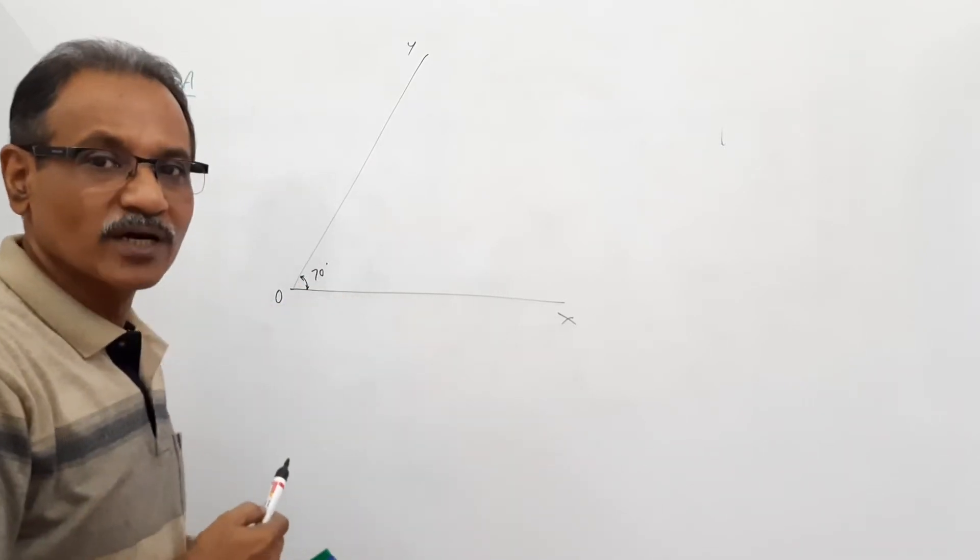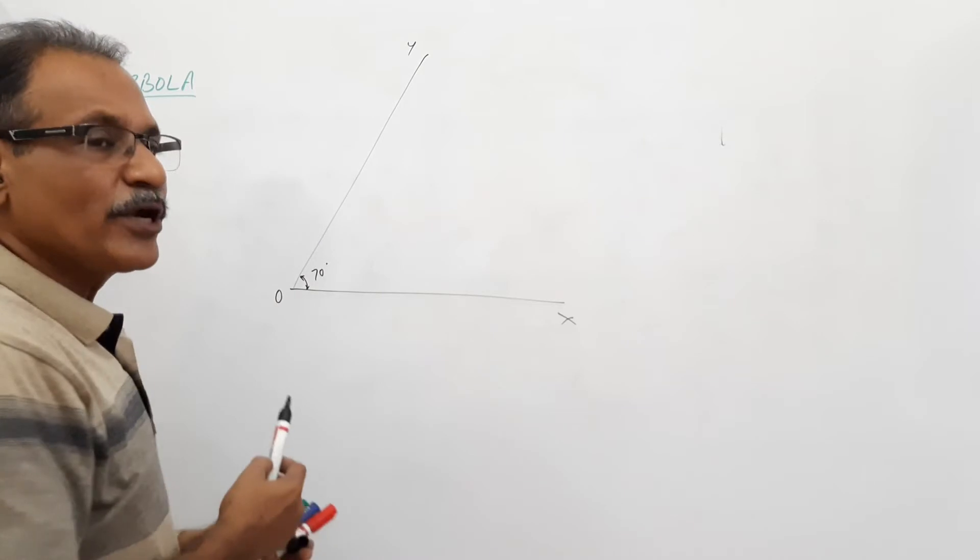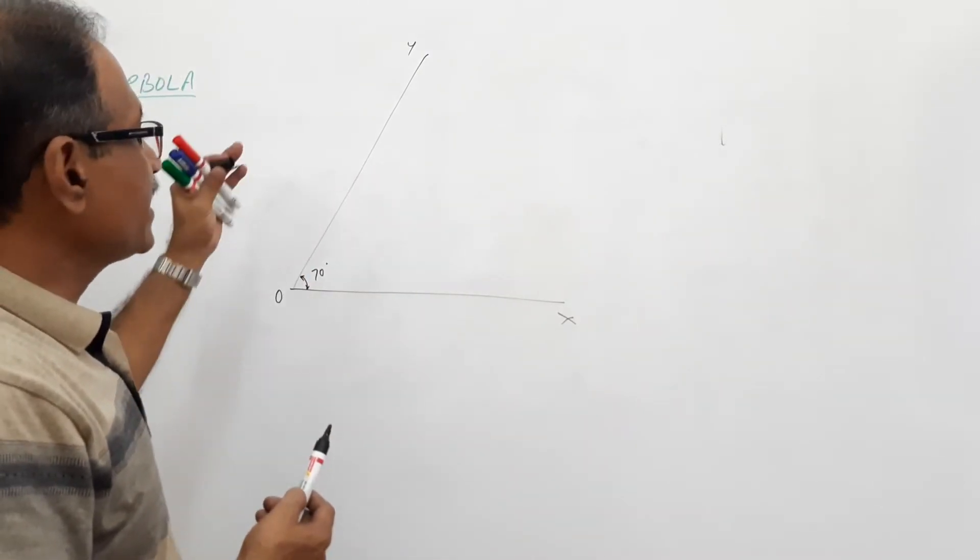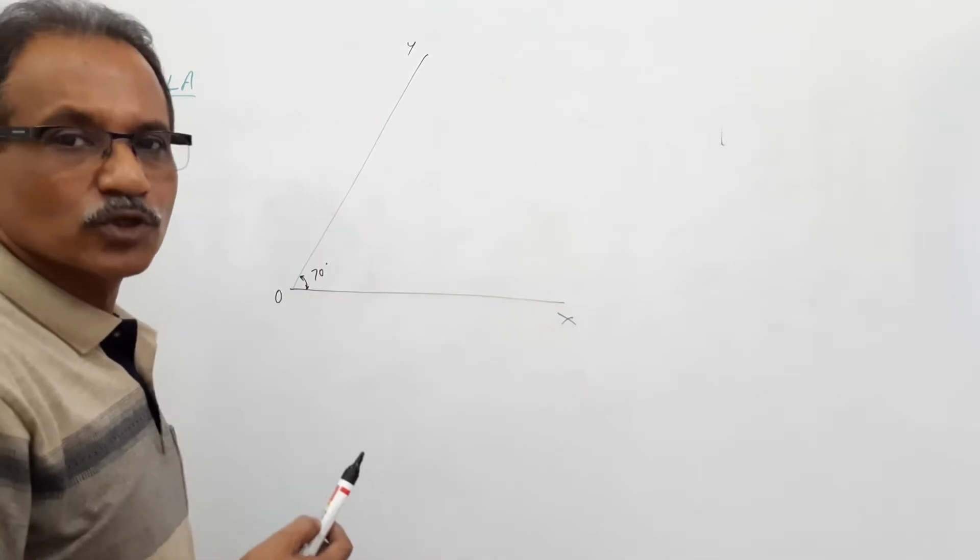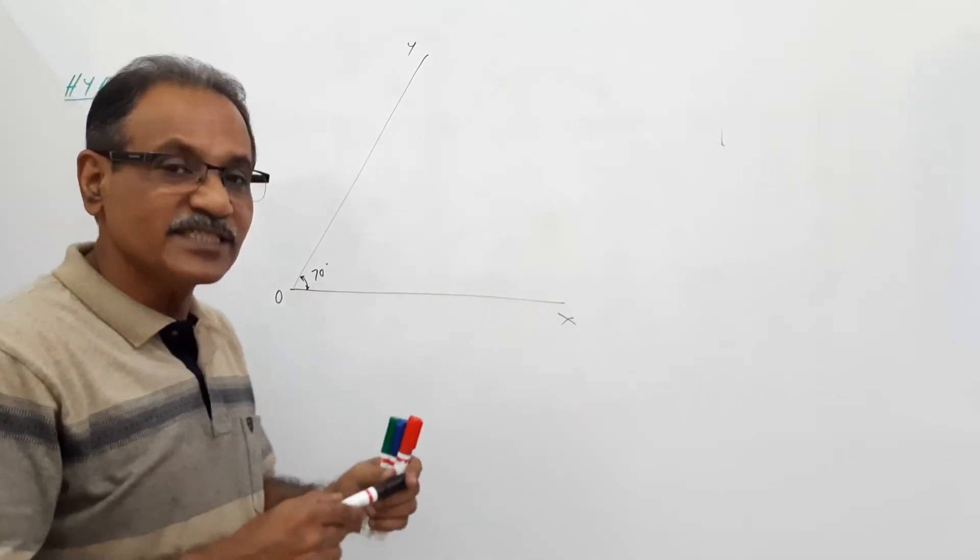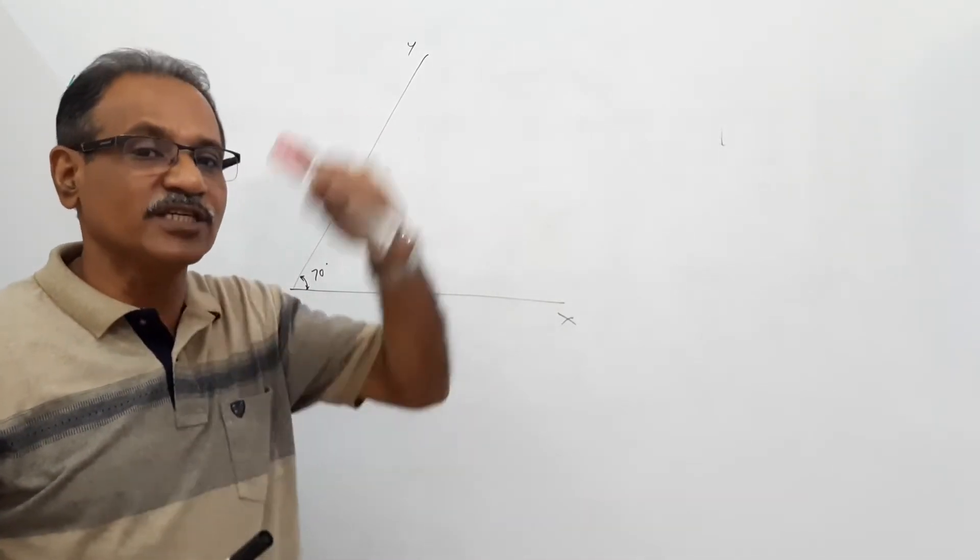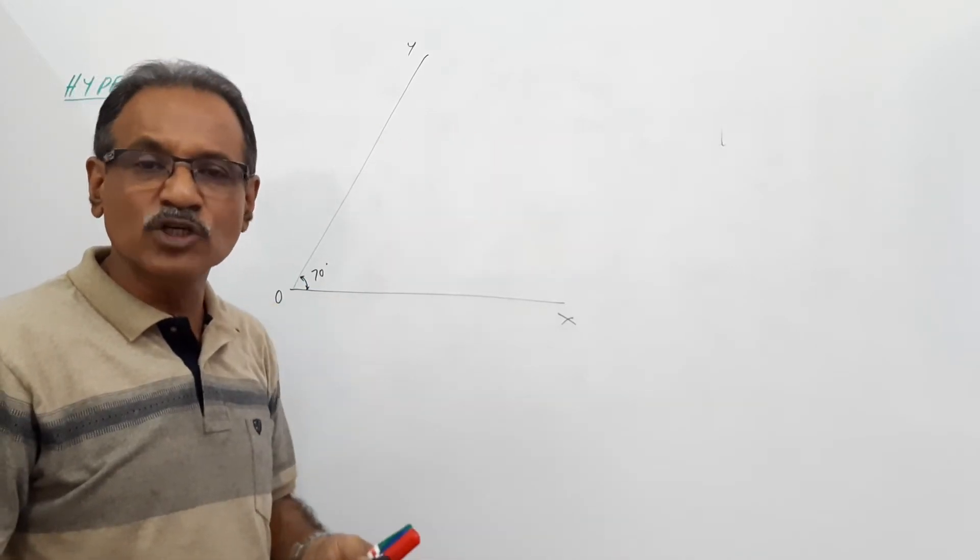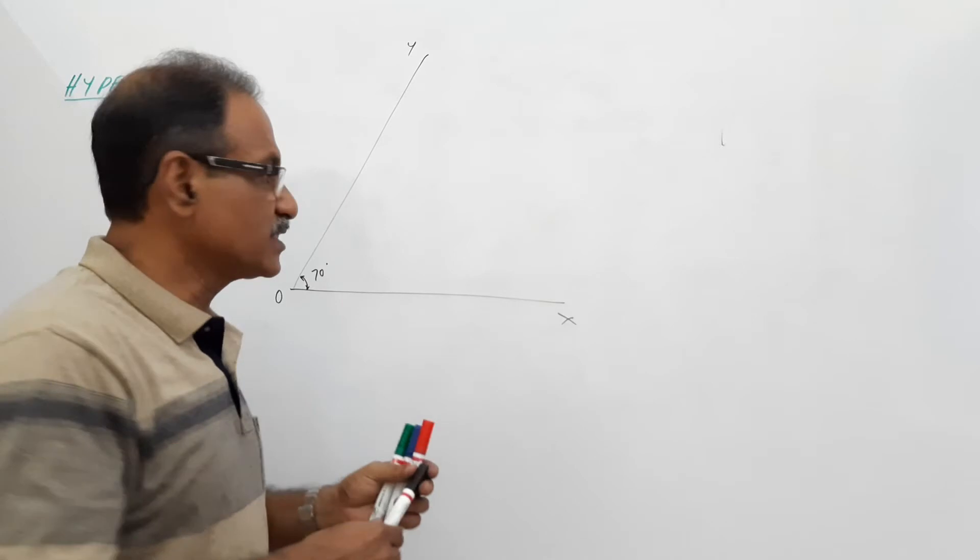This is not a rectangular hyperbola. These are asymptotes. The point on the hyperbola is 40mm from one asymptote and 30mm from the other asymptote. When you are given such distances, you have to take the minimum distance.